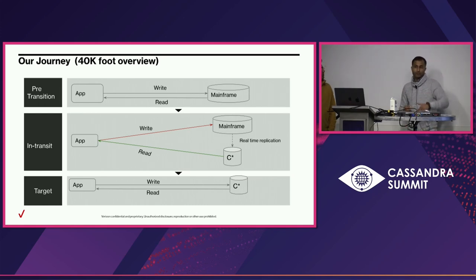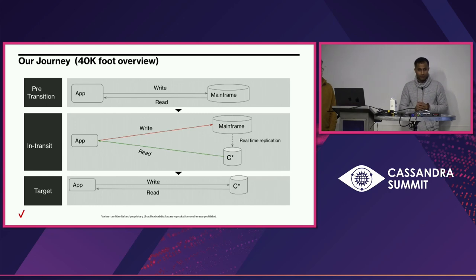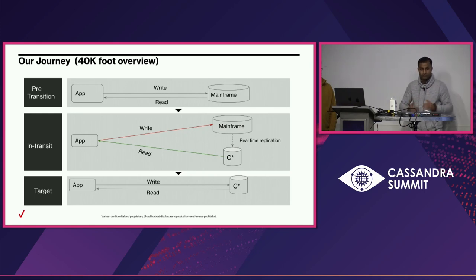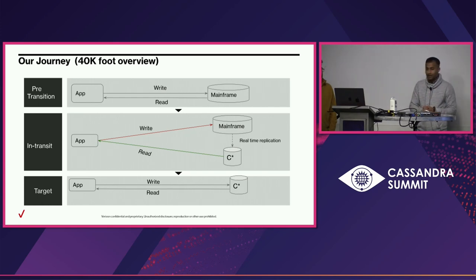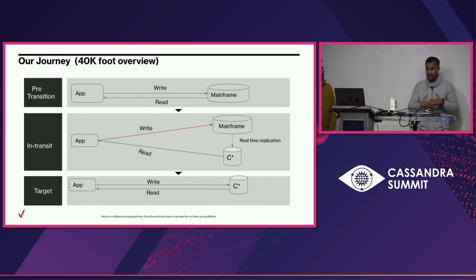For example, if you're on verizonwireless.com adding a phone line and immediately want to see whether the phone was added or provisioned — that data goes into mainframe and is immediately served from Cassandra in real time, within certain milliseconds. Why did we do this? MIPS cost in mainframe means if you read more, you pay more. We wanted to get rid of MIPS as soon as possible so we wouldn't have to add engines during peak times like Black Friday. So we copied data in real time from mainframe to Cassandra, and added all our APIs on top — without changing any of our existing APIs.